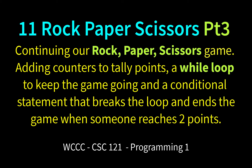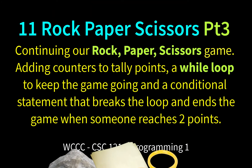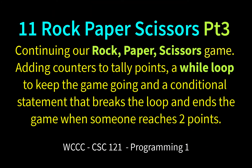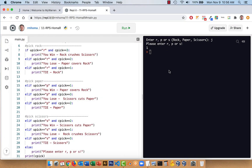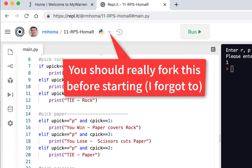Welcome back to part three of our EX11 programming one, CSE 121 for fall 2020. In part three, we're going to use a while loop for our rock, paper, scissors so we can keep running it until someone gets two out of three wins. We have all our code working here as a one-off, so we're going to throw it in a loop.